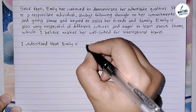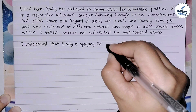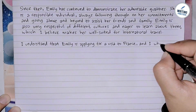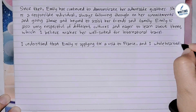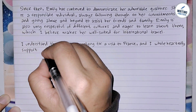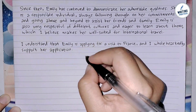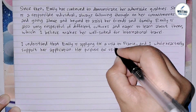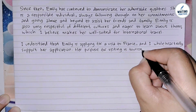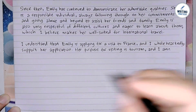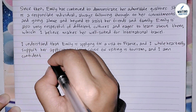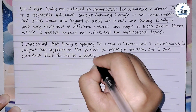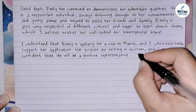In the fourth paragraph, you write your support for the visa application. Express your support for the applicant's visa application and mention the purpose of their travel. State your belief in their ability to comply with the visa's requirements. Indicate your full support for the visa and the purpose of their travel, such as tourism, and confirm their understanding of the responsibilities that come with a visa.